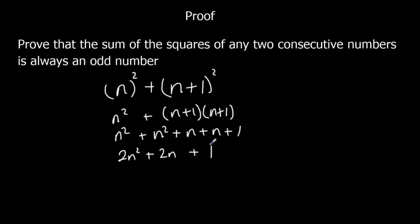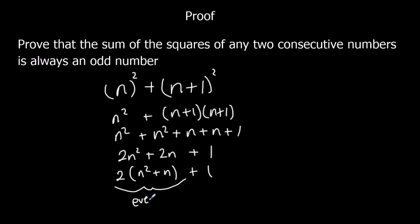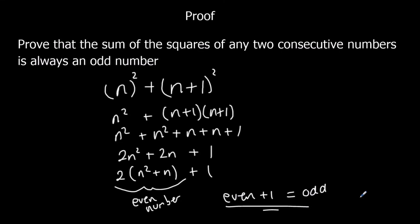So how do we know it's an odd number? Well, this part here is 2 times (n squared plus n), so this part is an even number. And even plus 1 is odd. So: this is even, and if you add 1 to an even number you get an odd number. There we go — that's proven that as well.